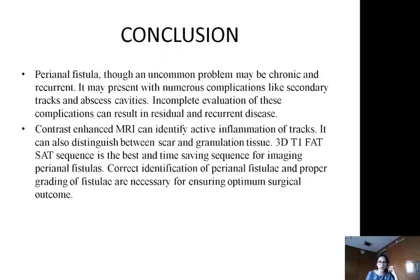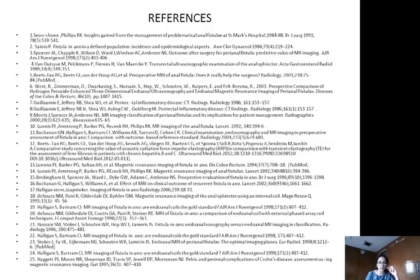Conclusion: Perianal fistula, though an uncommon problem, may be chronic and recurrent, and may present with complications such as secondary tracts, abscesses, and cavities. Incomplete evaluation of these complications can result in residual and recurrent disease. Contrast-enhanced MR can identify active inflammation of the tract and distinguish between scar and granulation tissue. The 3D T1 fat-sat sequence is the best sequence for imaging of perianal fistulas. Correct identification and proper grading of perianal fistula are necessary for ensuring an optimal surgical outcome.